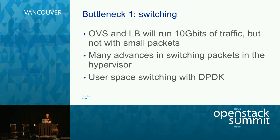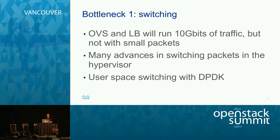So if you're forwarding internet-style traffic you run into that problem. There are many advances in how we switch packets in the hypervisor. Our preference is user-space switching with DPDK: you take the responsibility of moving packets away from the kernel, use a very optimized layer of device drivers, and optimize compute resource usage. We've seen performance up to 64-byte packets at 10 Gbps in the right circumstances. It varies a little depending on your setup, but that's one example.